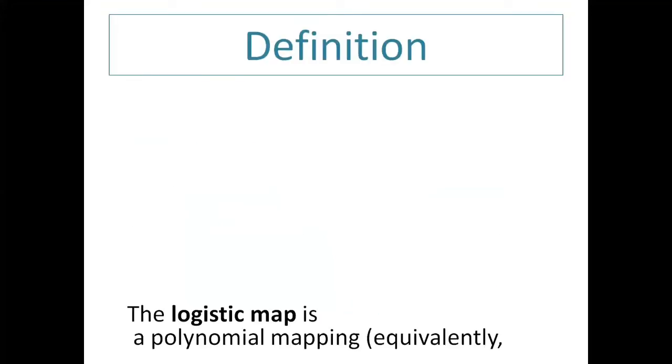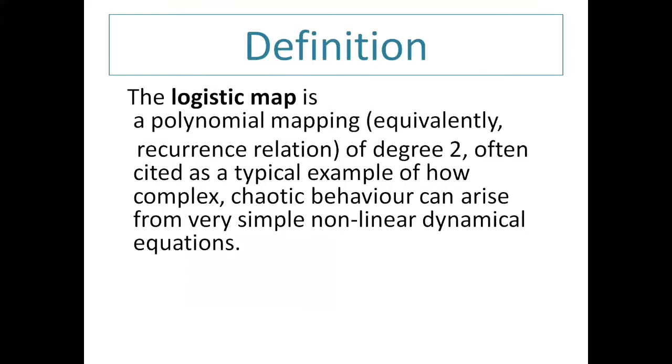The logistic map is a polynomial mapping. It currently reoccurrence a relation of degree 2 or in simple words, I can say that it is a polynomial function between two mathematical objects. It is an example of how complex chaotic behavior can arise from very simple non-linear dynamic equations.